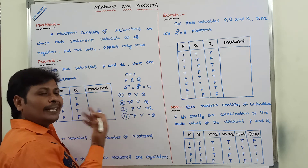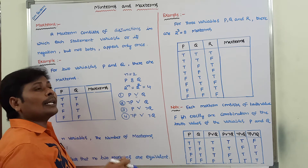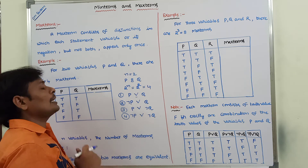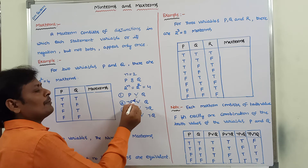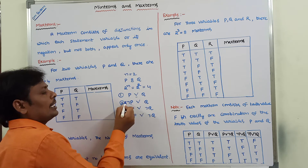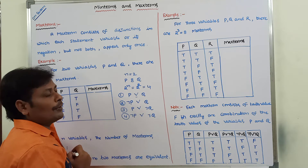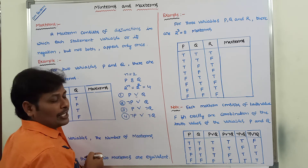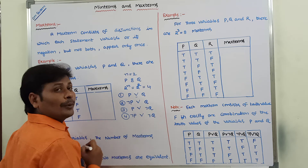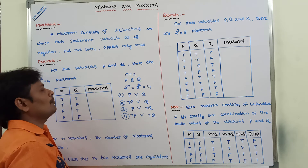In each and every min term or max term, both variables — either in normal form or in negation form — should be present. Otherwise, it is not a min term or max term. In the first max term, both variables are in normal form. In the second, one variable is negation p and the other is normal q. In the third, normal p and negation q are present. In the fourth, both variables have negation: negation p and negation q.